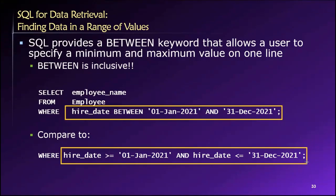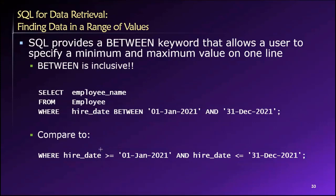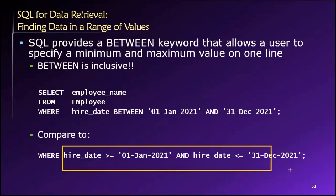So either of these works, right? You can use the greater than or equal to and less than or equal to syntax. So I'm saying this condition must be true: they must be hired on or after January 1st, 2021, and they must also have been hired on or before December 31st, 2021. So we're specifying a range of acceptable values using this syntax as well.